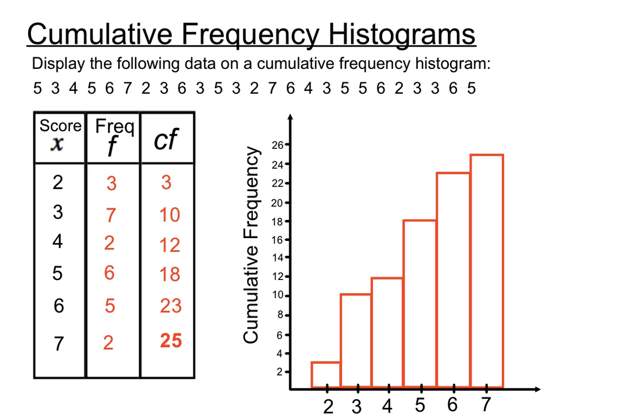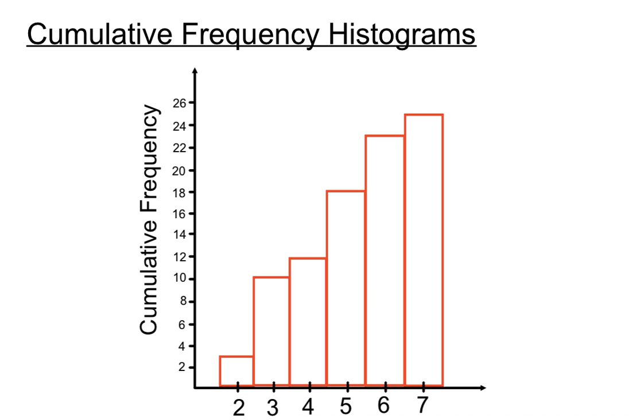So that's a cumulative frequency histogram. And there you have it. I hope that helps. That's how we create a cumulative frequency column on the edge of our previous frequency distribution table, and then we just graph that column we created. Thanks for listening. Catch you next time.